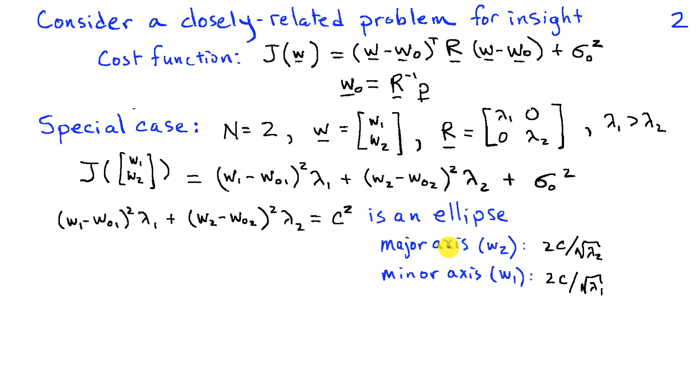Now this part of the cost function that involves W should be recognizable as an ellipse. If I set that part of the cost function equal to some constant, say C squared, I have an ellipse whose major axis is along the W2 direction and has length 2C divided by the square root of lambda 2.